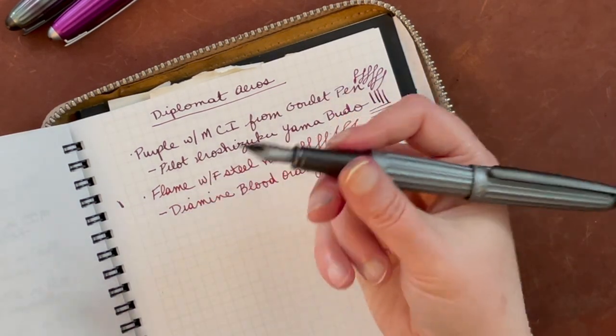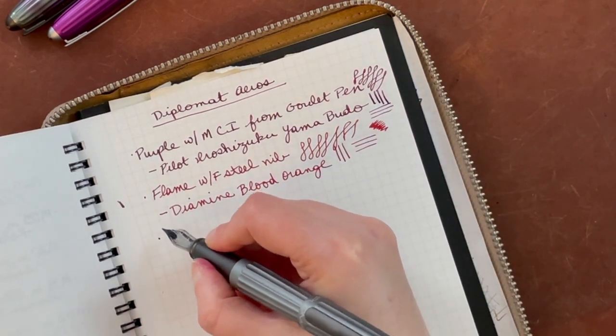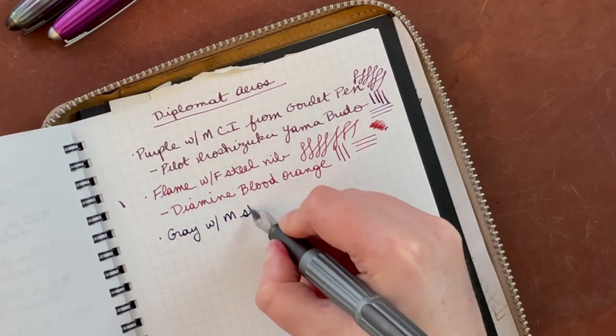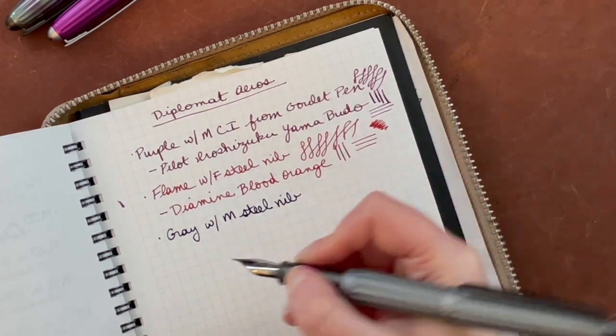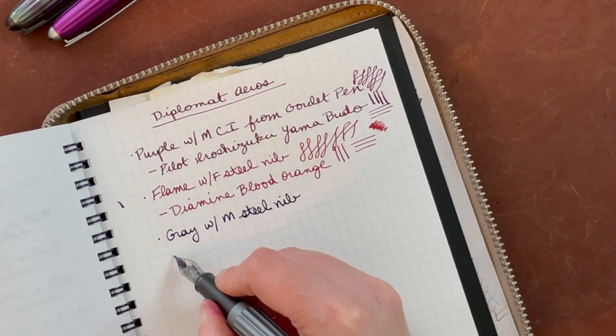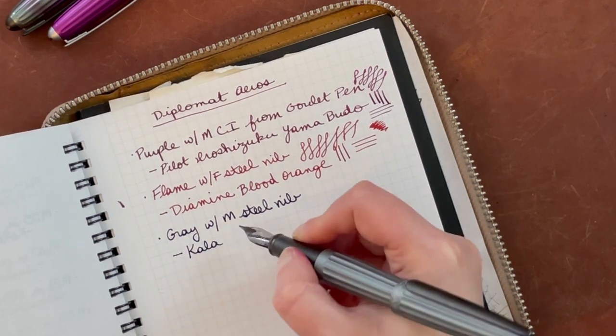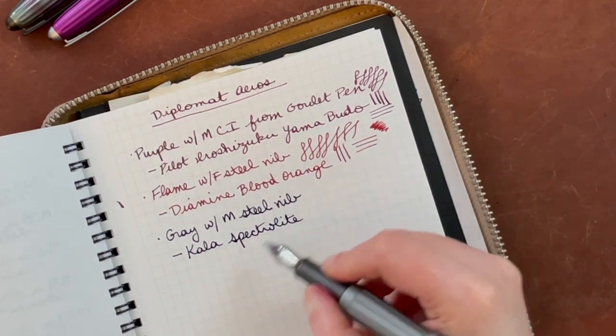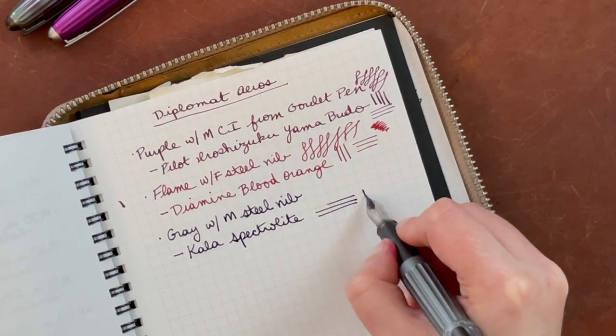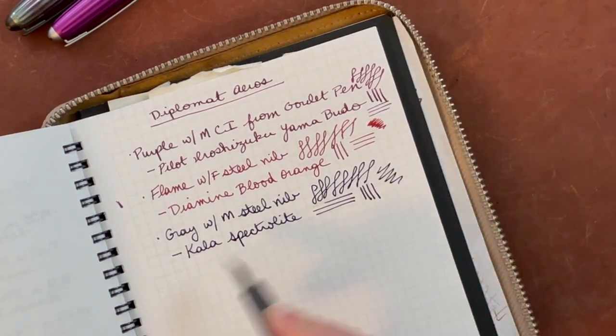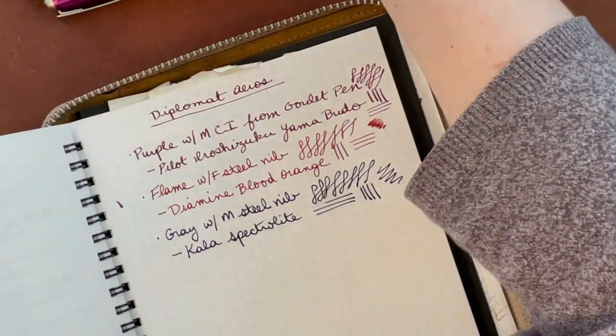And then this one I will post because it's lighter. This one is just the gray with a medium steel nib. And this is probably my favorite plain nib of the two here, but the fine is beautiful too. And then this ink is Kala Spectralite. I've had a little bit of issues with this ink, but it seems to work pretty well in this pen. All right. It looks almost black, but it's got sort of a grayish green tinge to it. So there you go.